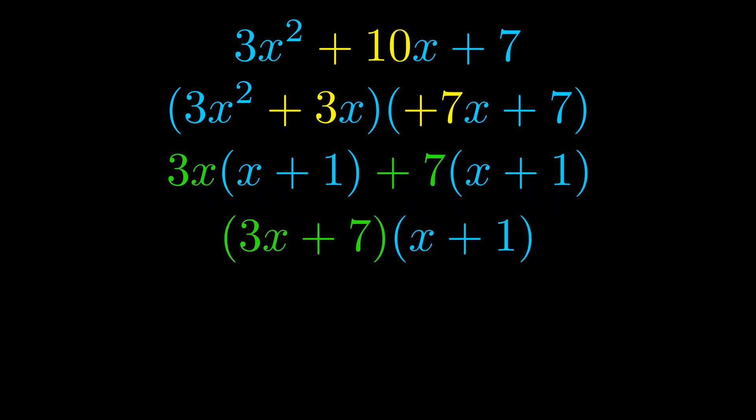The blue values are the same. Those blue values will become one of our factors, and we will combine the two green values—the GCFs that we pulled out—to get the other one. And that is our fully factored equation.